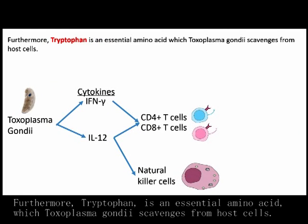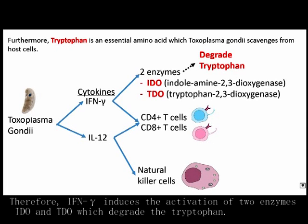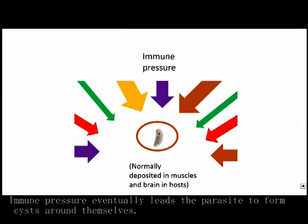Furthermore, tryptophan is an essential amino acid which Toxoplasma gondii scavenges from host cells. Therefore, IFN-gamma induces the activation of two enzymes, IDO and TDO, which degrade the tryptophan. Immune pressure eventually leads the parasites to form cysts around themselves.